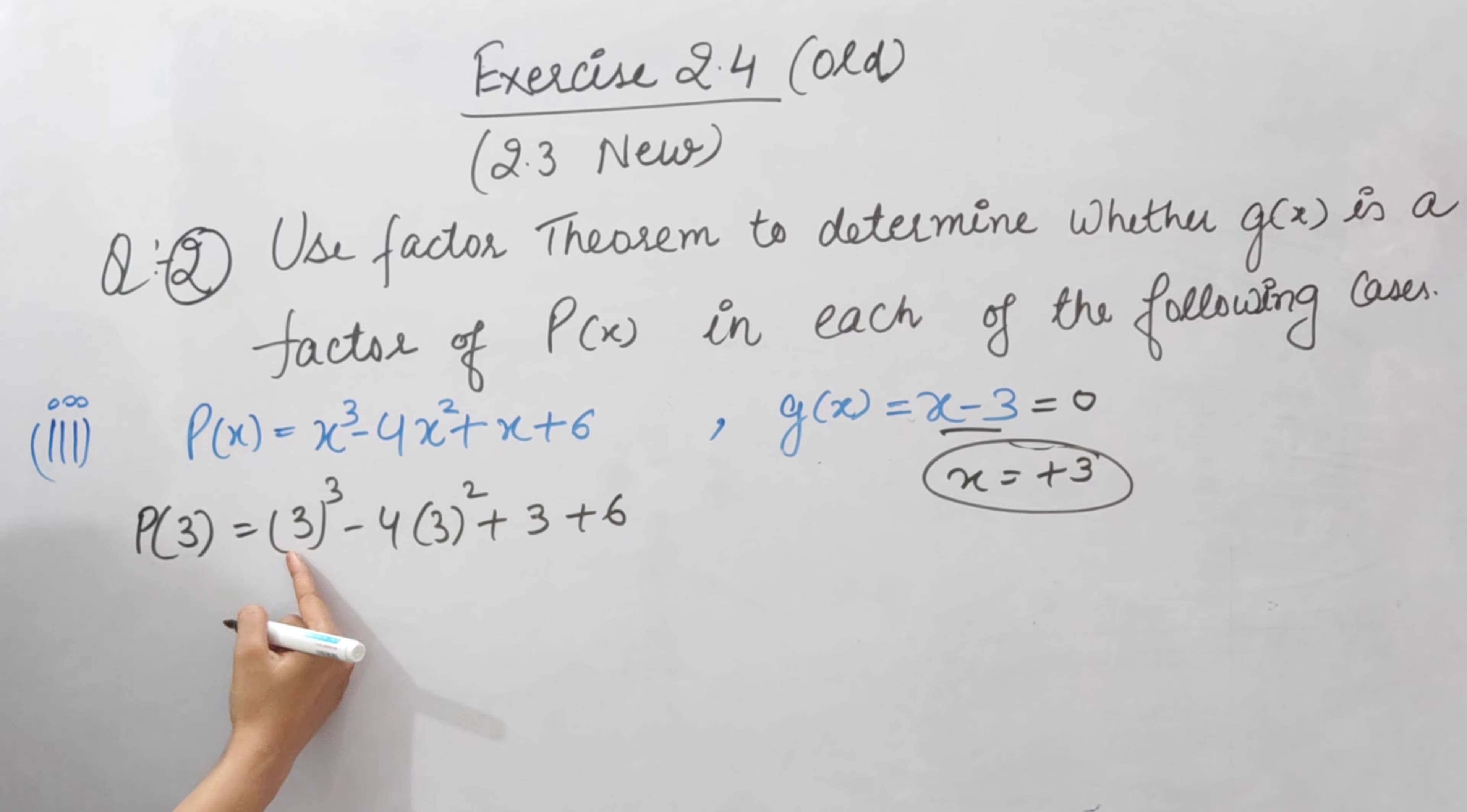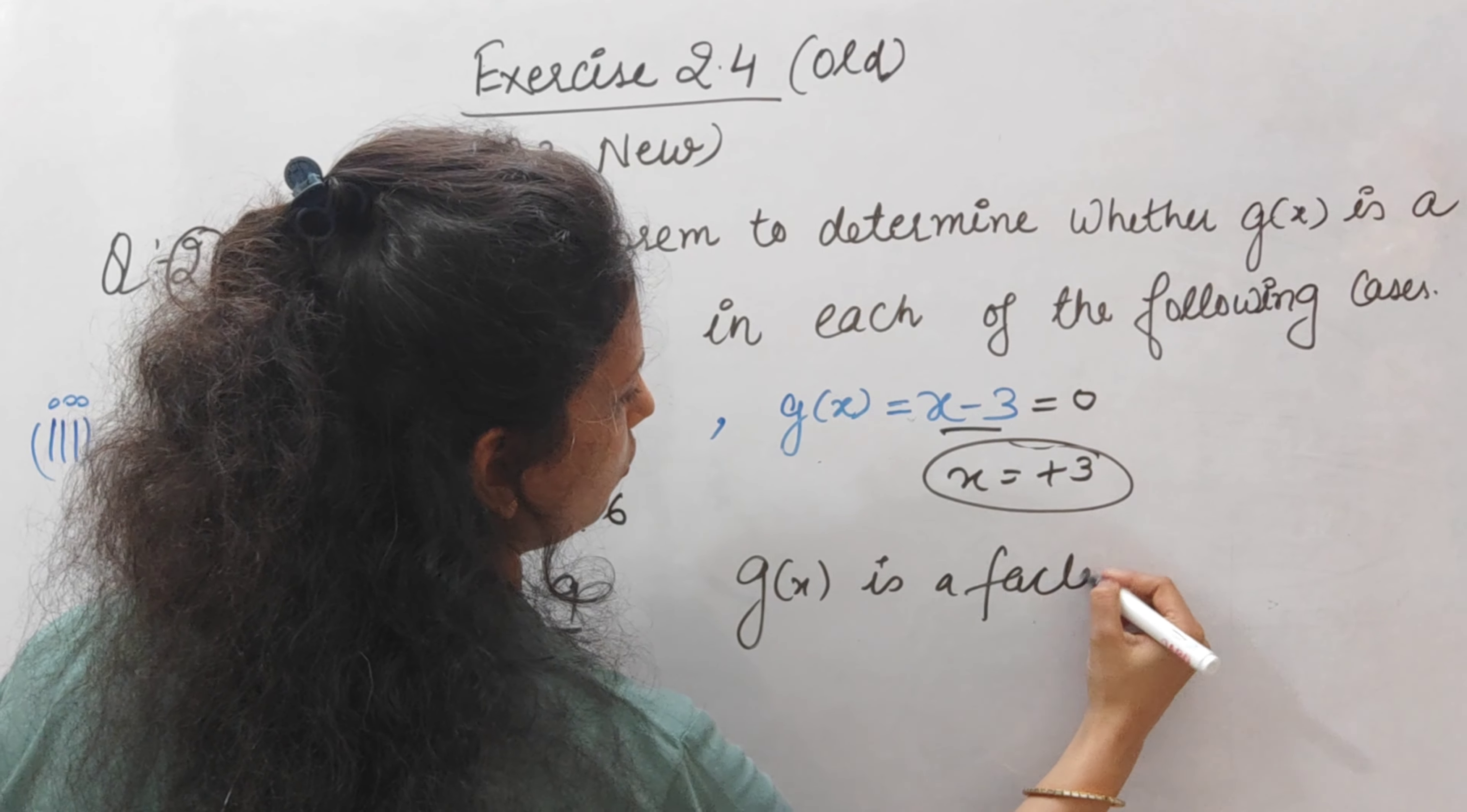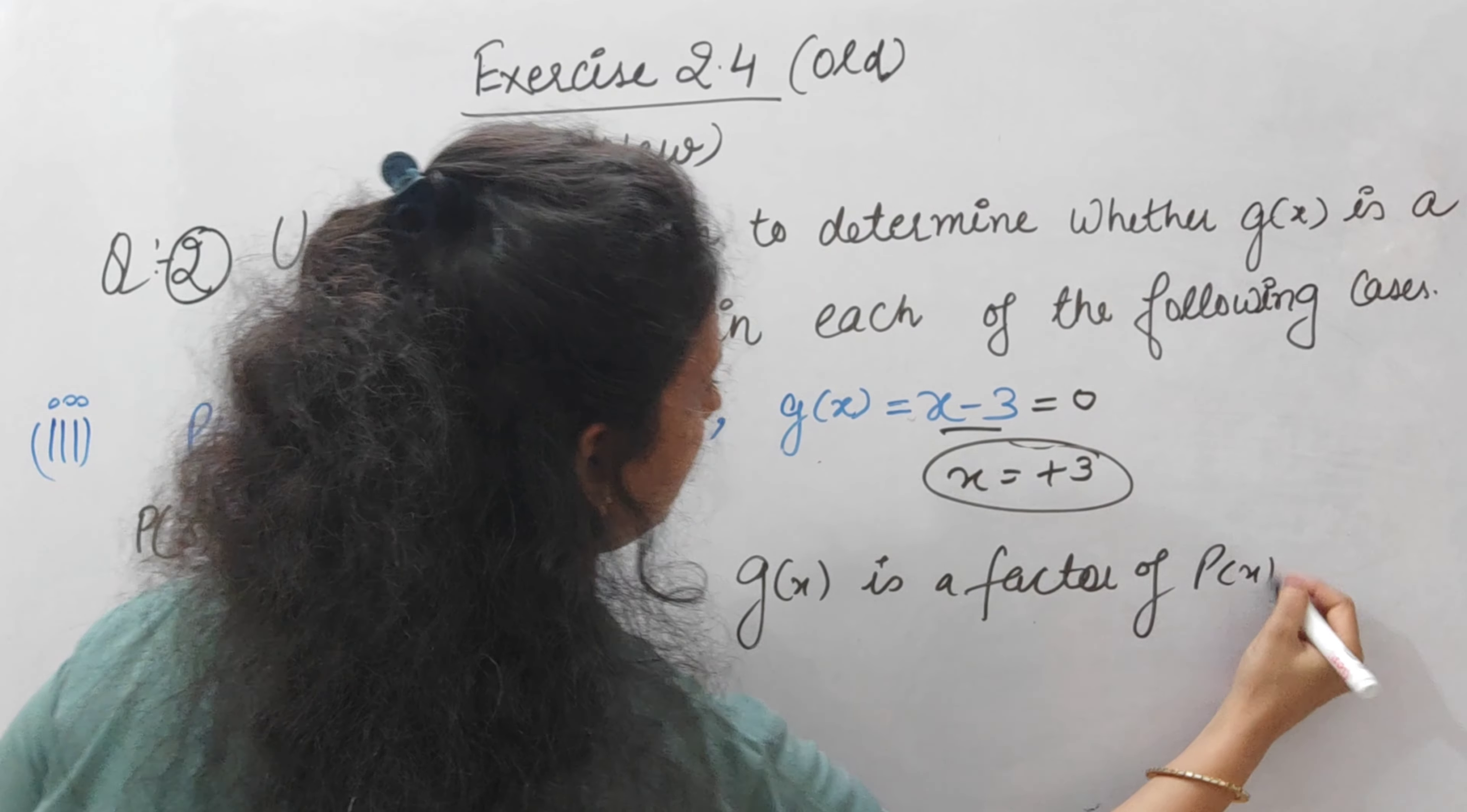This gives us 27 minus 4 times 9 plus 9. That's 27 plus 9 is 36, and this is minus 36. So 36 minus 36 is 0. So when we put the g(x) polynomial into P(x), the polynomial becomes zero. This means g(x) is a factor of P(x).